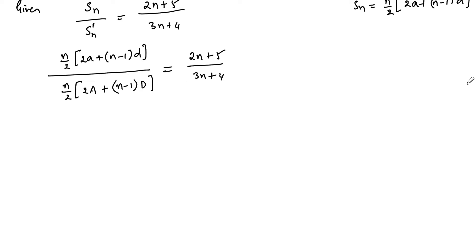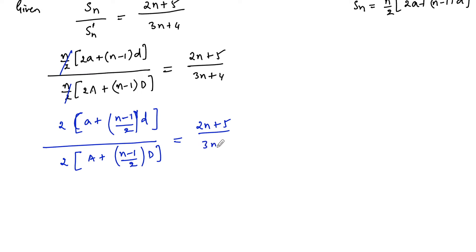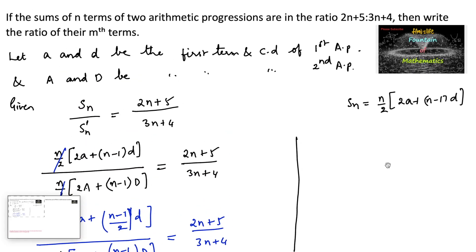Further simplifying, we can cancel n upon 2, take 2 common, and write a plus n minus 1 upon 2 into d, upon capital A plus n minus 1 upon 2 into capital D, equal to 2n plus 5 upon 3n plus 4. We cancel the 2s, and note that we need to find the ratio of their mth terms.